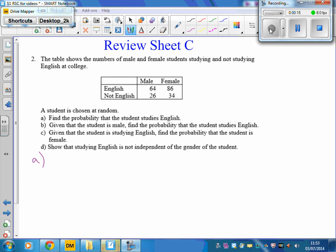The first thing you do when you get a two-way table is actually total up the rows and the columns. So we would have 90, 120, 150, 60. Overall total of 210. 210 students altogether.